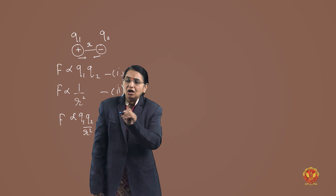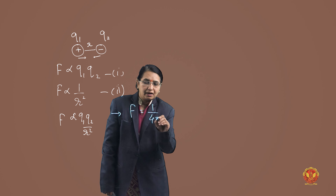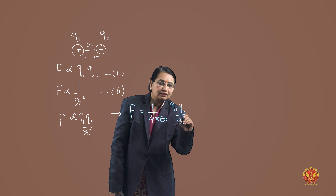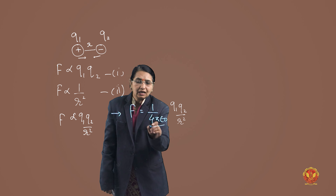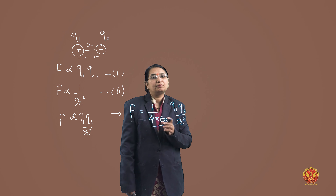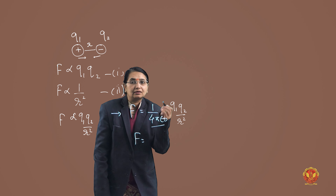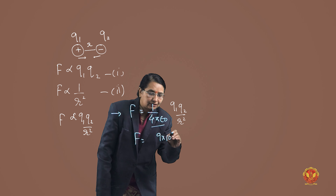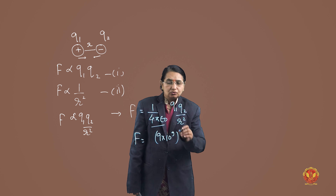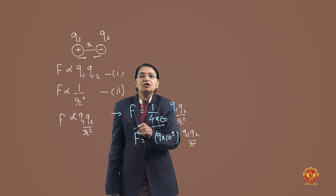Removing the proportionality sign, we introduce the proportionality constant 1 over 4π·ε₀. So the formula becomes F = (1 / 4π·ε₀) · (Q1·Q2 / R²). This is our general formula for Coulomb's Law.